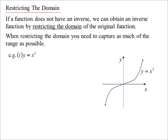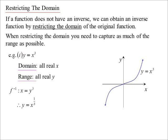Let's look at y equals x cubed. It already had an inverse function, so we don't have to restrict the domain. The domain is all real x and the range is all real y. Working out the inverse: swap x and y, make y the subject, and we get y equals x to the power of one third, the cube root of x. The domain swaps with the range and the range swaps with the domain — though in this case they happen to be the same, which makes it a bit of a bad example to illustrate the swap.